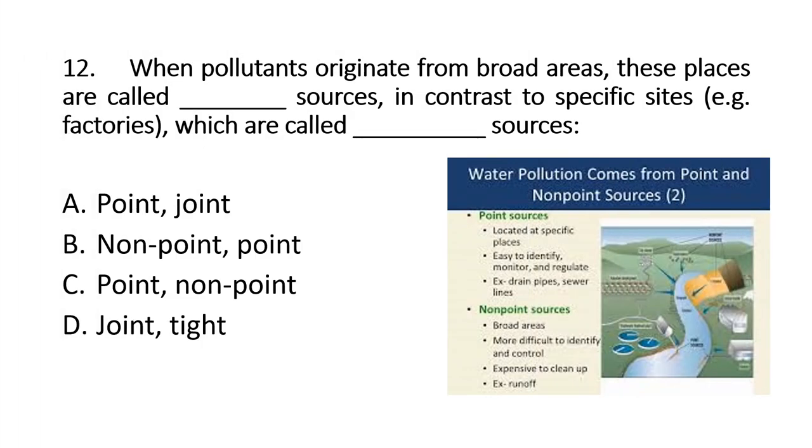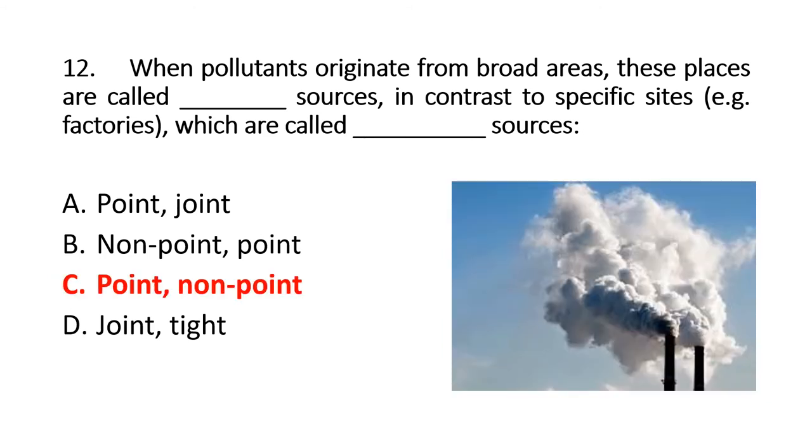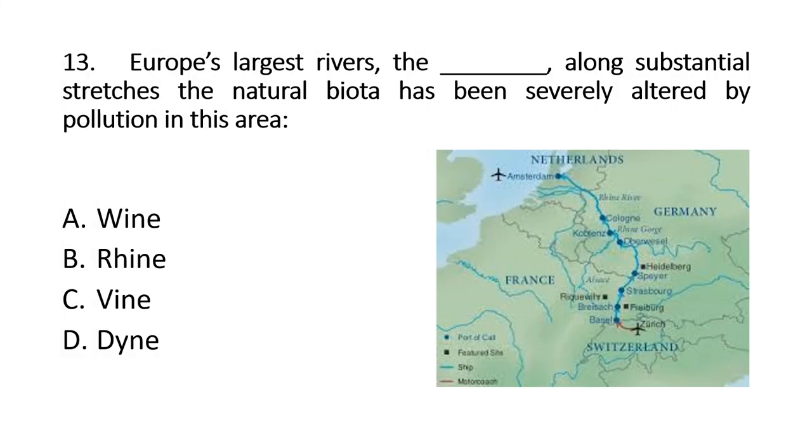Question 12: When pollutants originate from broad areas, these places are called blank sources, in contrast to specific sites which are called blank sources. The right option is C: point and non-point. This is a very important short question.